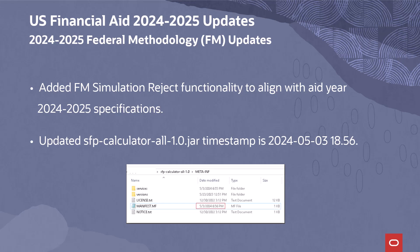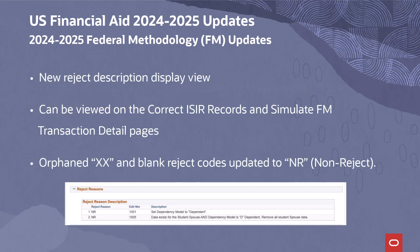The updated SFB Calculator All 1.0 JAR file timestamp is 2024-05-03-1856. A new Reject Description Display View has been delivered. This updated Reject Description Display View can be viewed on the correct ISA records and Simulate FM Transaction Detail pages. Orphaned XX Reject Codes and Blank Reject Codes have been updated to display NR.